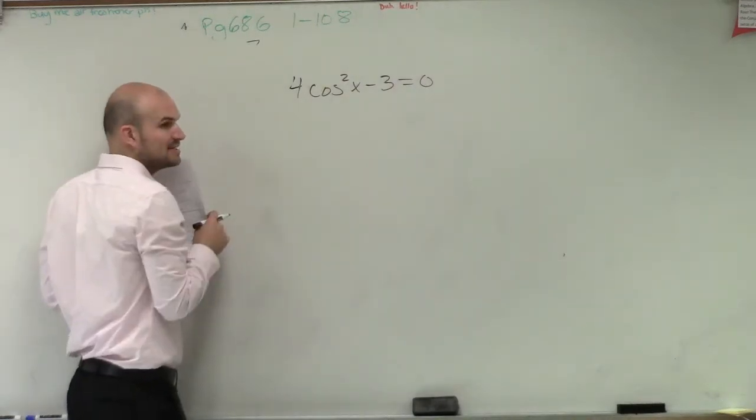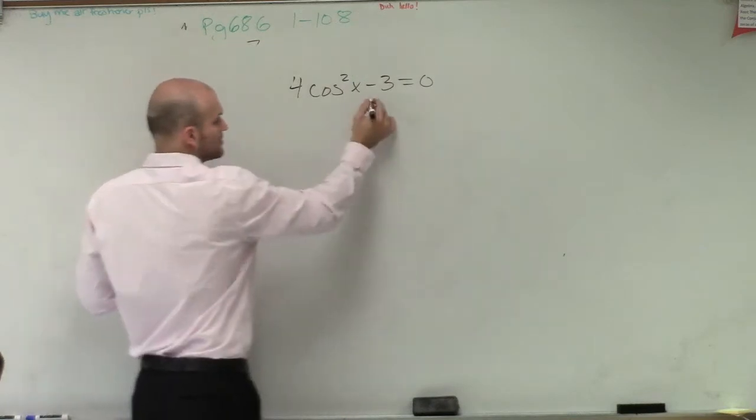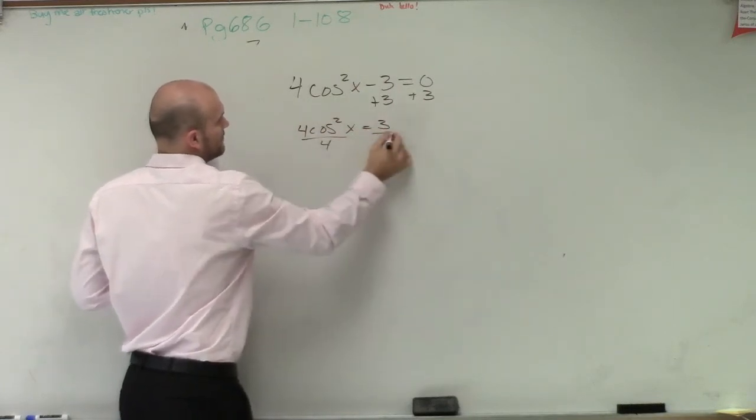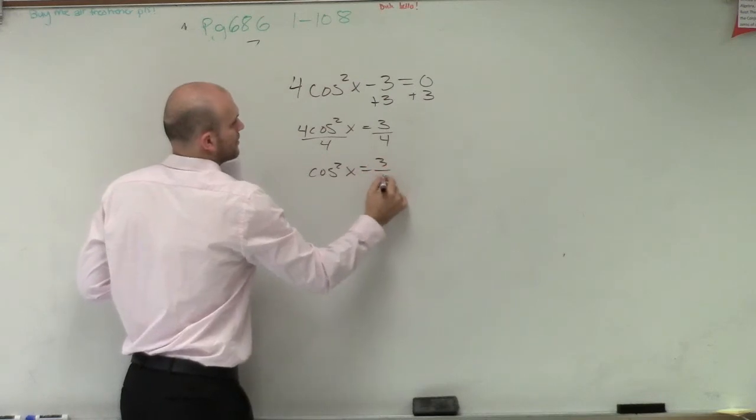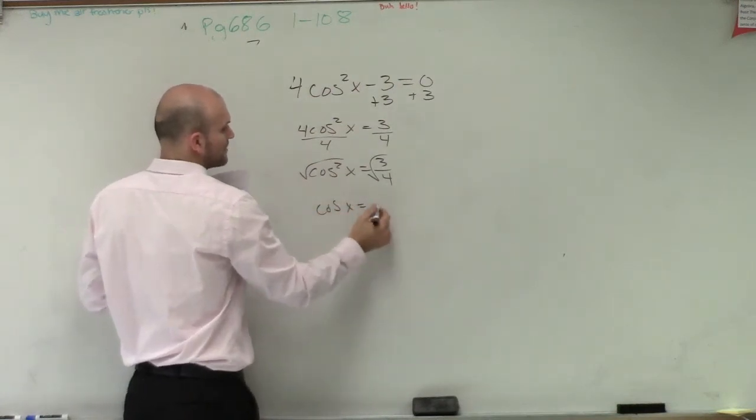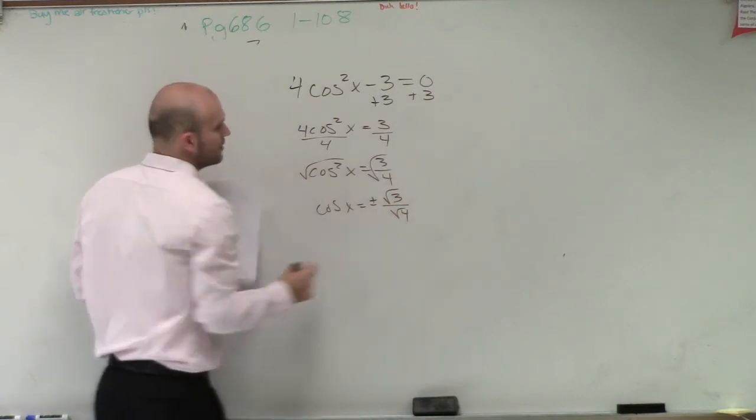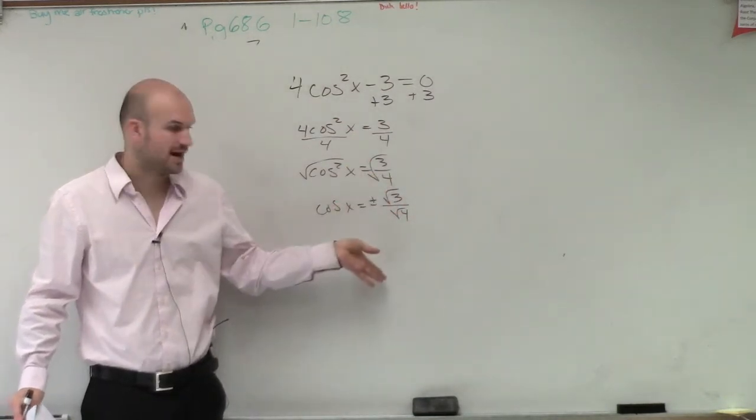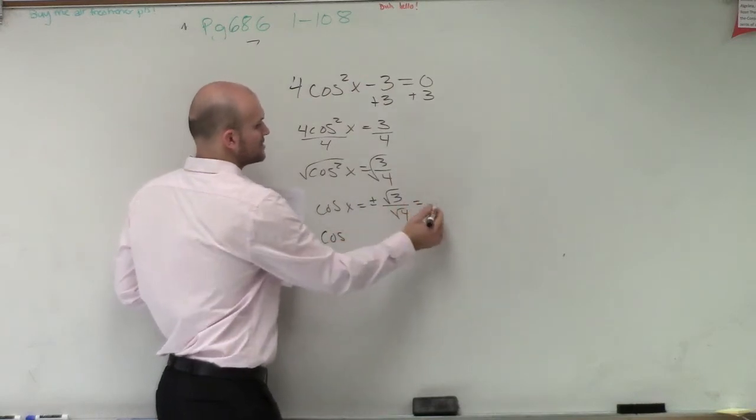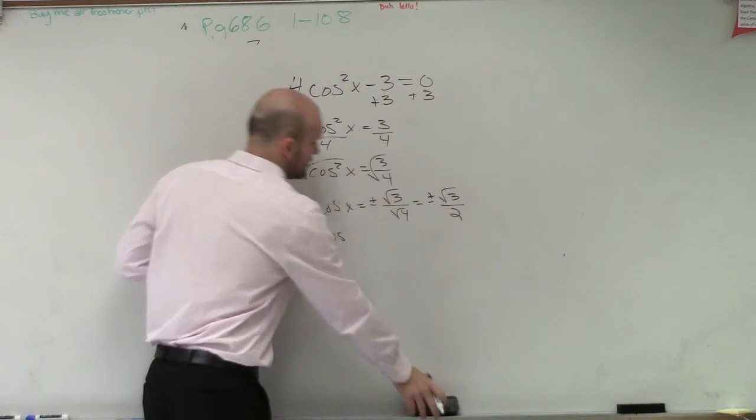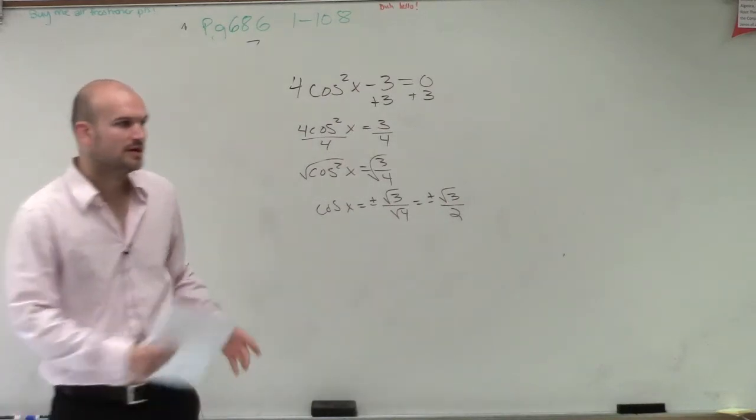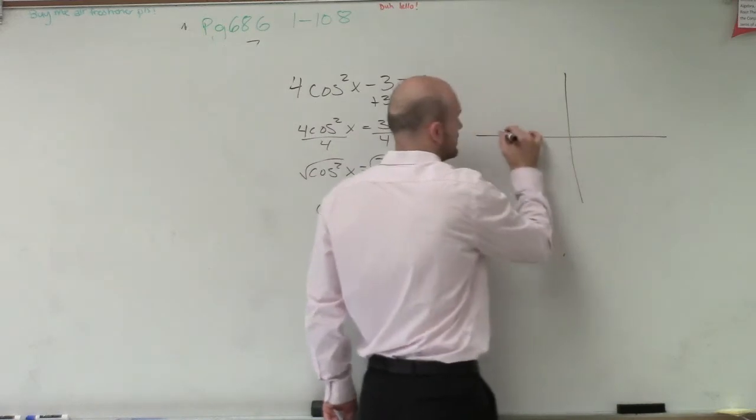So the first thing we need to do, obviously, is we need to solve for our cosine of x. So first thing we do is add 3 to both sides. Then I have 4 cosine squared of x equals 3 divided by 4. Then I need to solve for cosine of x, so I'm going to take the square root. Therefore, I have cosine of x equals plus or minus the square root of 3 over 2. So what they're asking us to do is find the values when cosine of x is equal to plus or minus the square root of 3 over 2.